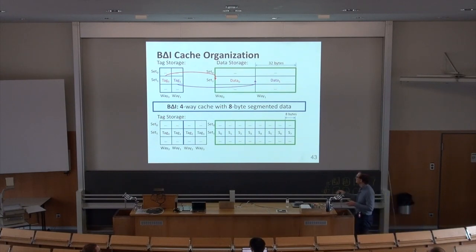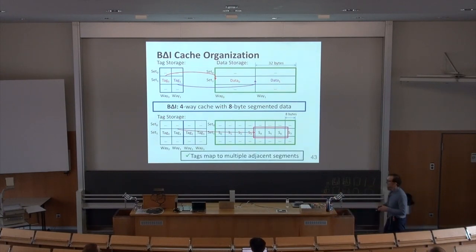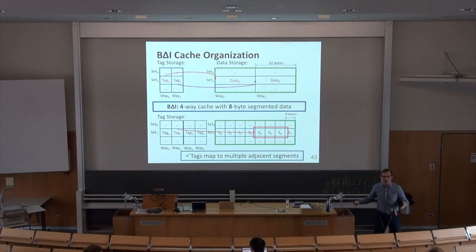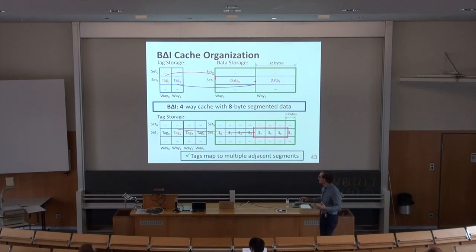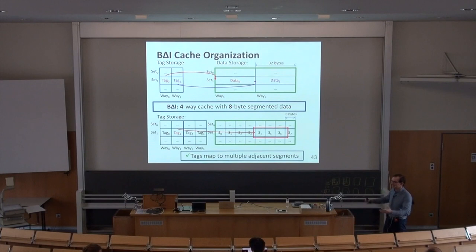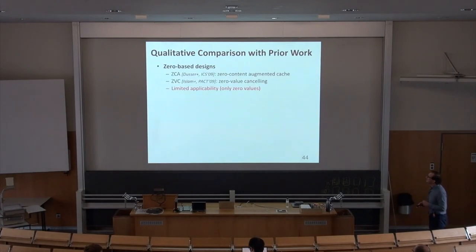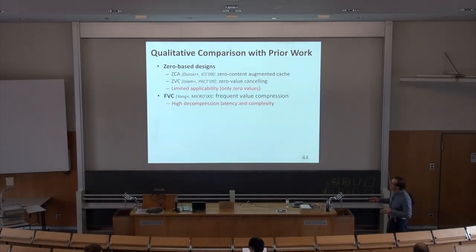This is one way to organize a compressed cache with minimal structural changes. The tag store gets more entries and encoding bits, but the data store organization is similar. You could also go to a fully associative design where any address maps anywhere, but that requires a large translation table. For a 2 MB cache the overhead is about 2.3%, which sounds low but is still a significant part of the processor.